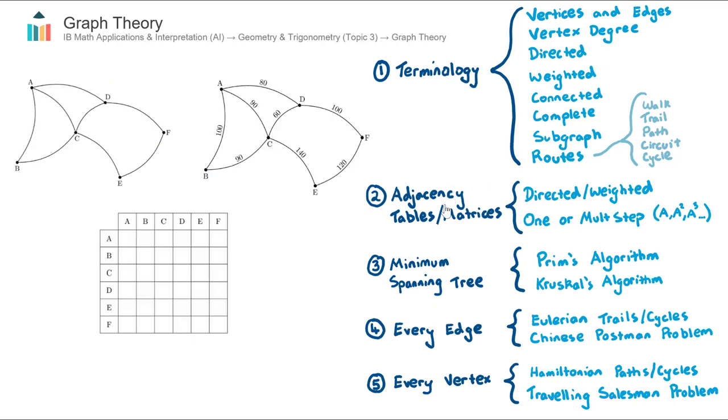Let's now talk about adjacency tables and matrices. And I have a table here. These types of adjacency tables can either be directed or undirected. And currently looking at my graphs here, they are undirected. And they can also be weighted or unweighted.